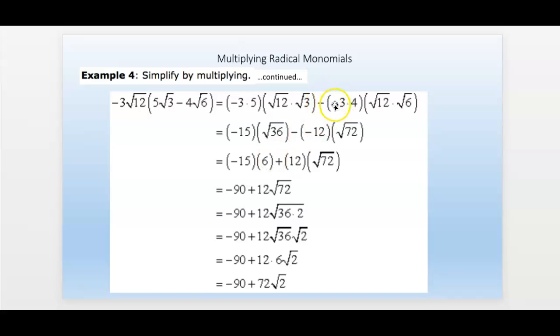Now back here, this is where we're subtracting negative 3 times 4, so this ends up being a positive 12, right here, positive 12. And 12 times 6 is 72. Well, 72 is 36 times 2, and 36 is a perfect square, so I can take 36 outside, and it becomes 6. There's already a 12 out here, so 12 times 6 is 72, and this is our answer right here.